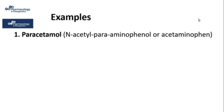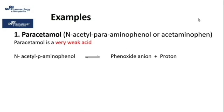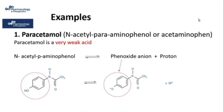Paracetamol, chemically known as N-acetyl-para-aminophenol or acetaminophen, is considered a very weak acid. Its equilibrium dissociation reaction shows N-acetyl-para-aminophenol dissociating into a phenoxide anion and a hydrogen ion. It is the phenolic OH group that dissociates. The pKa of phenol is 9.5 to 10, making phenols very weak acids, and therefore paracetamol is a very weak acid drug.